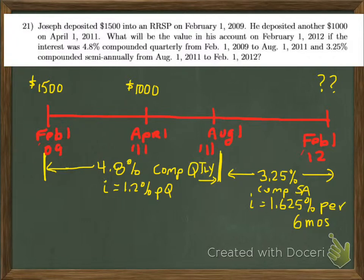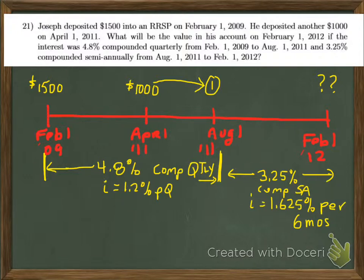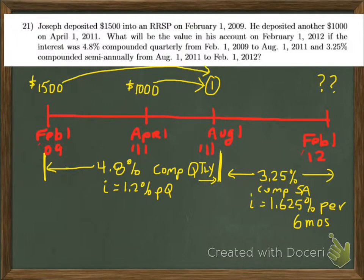This is going to be a two-step problem. Step one: figure out how much money is in the account after the 4.8% period ends on August 1 — we'll add compound interest to the $1,500 and to the $1,000. Then in step two, take that combined amount and compound it again using the second interest rate of 3.25% compounded semi-annually.